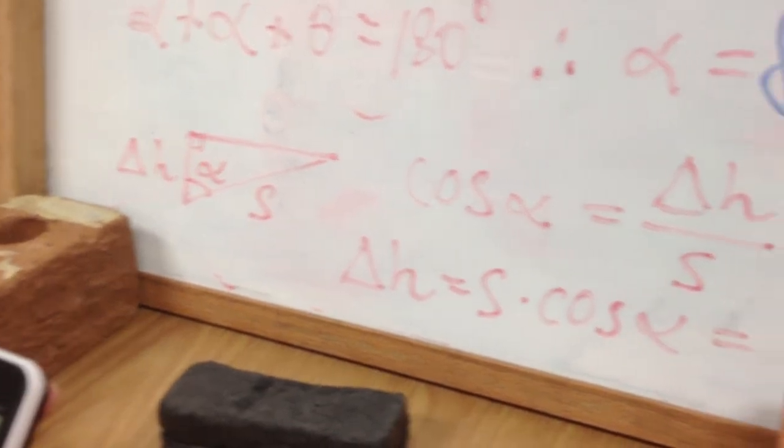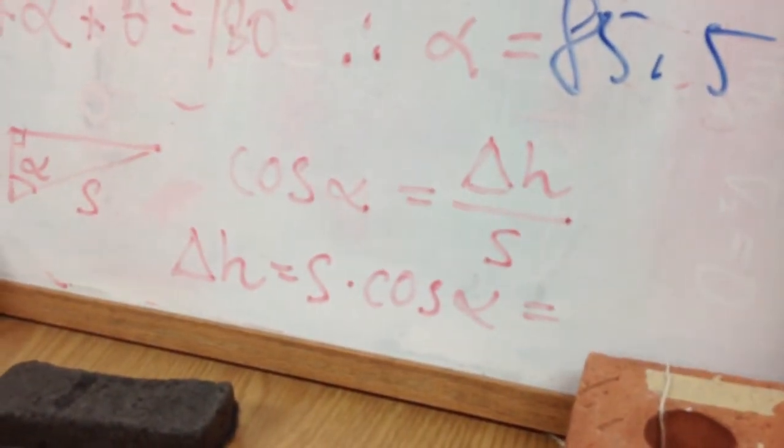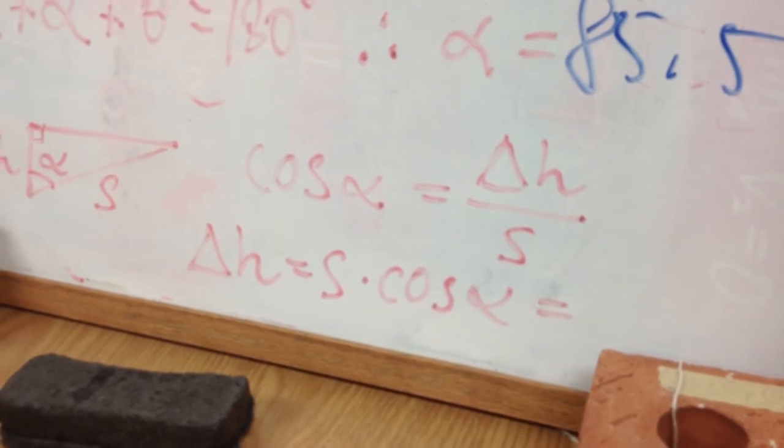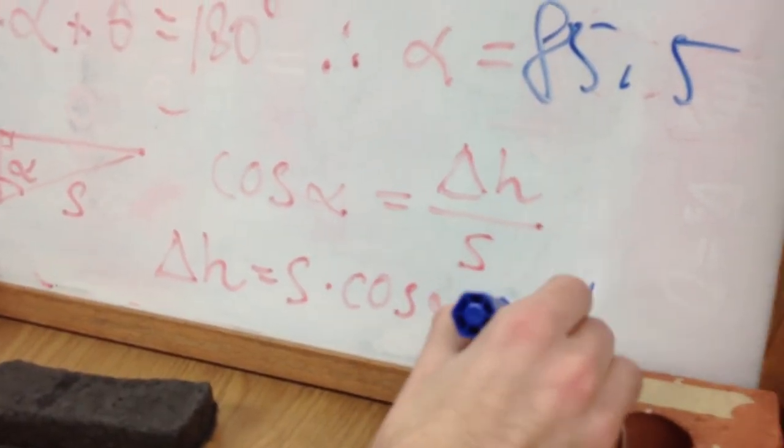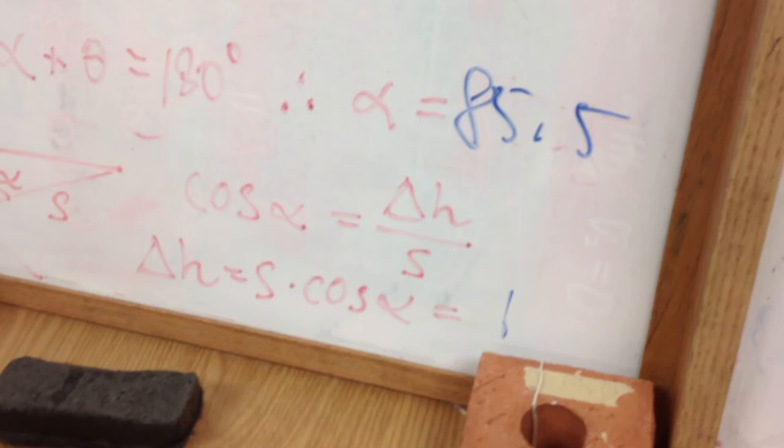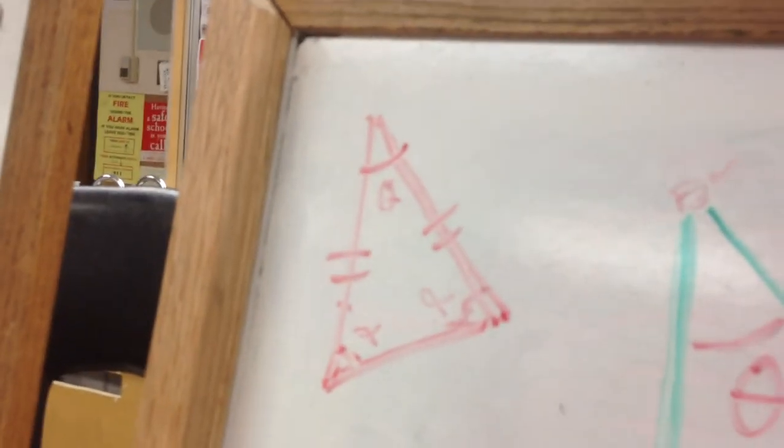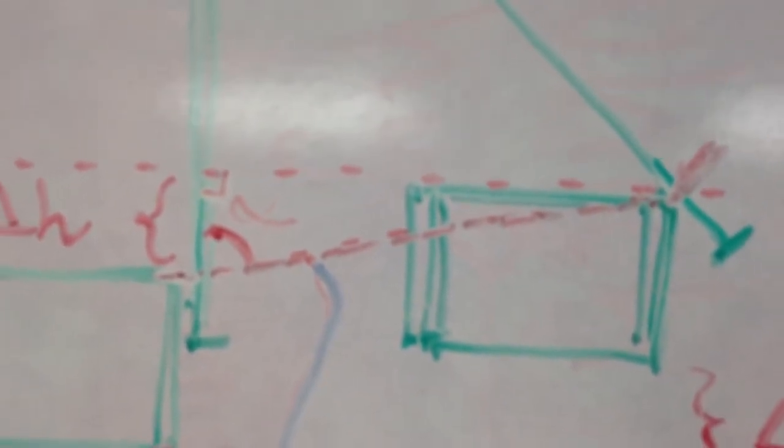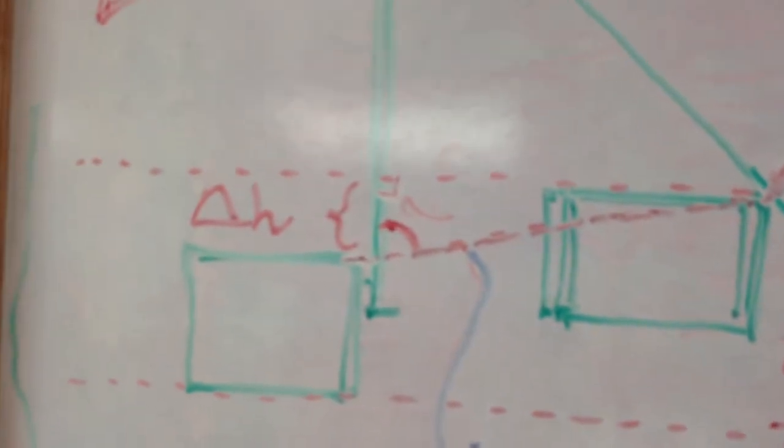Cosine of this times the side length, which is 20 centimeters, gives us... cosine 85.5 times the side length of 3.14, 3.14, is 0.24.